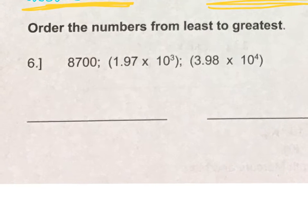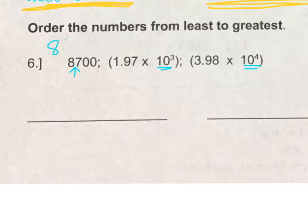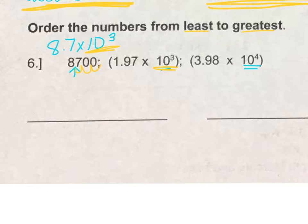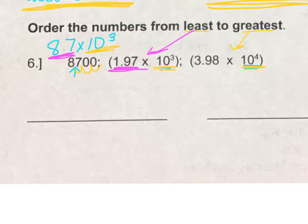For number 6, we are to order the numbers from least to greatest. I noticed that two of the numbers are already written in scientific notation. One way to solve this problem is to put the third number into scientific notation and then compare the powers of 10. So this would become 8.7 times 10, and the exponent would be 3. Now, to put the numbers in order from least to greatest, look for the smallest power of 10. We have two that are 10 to the third power and one that's 10 to the fourth power, so that one is the greatest. Then examining the coefficient, 1.97 is smaller than 8.7, so our least number is 1.97 times 10 to the third.